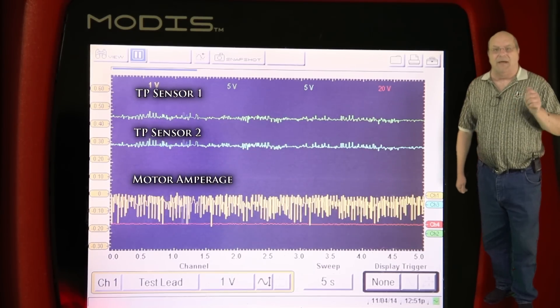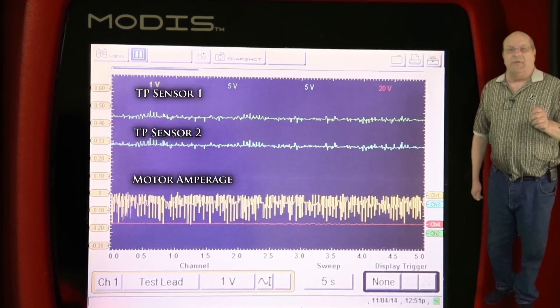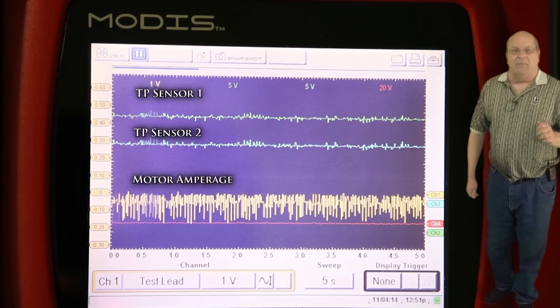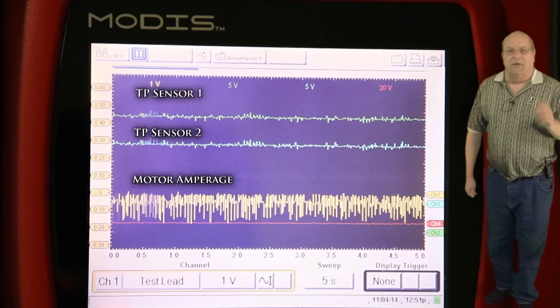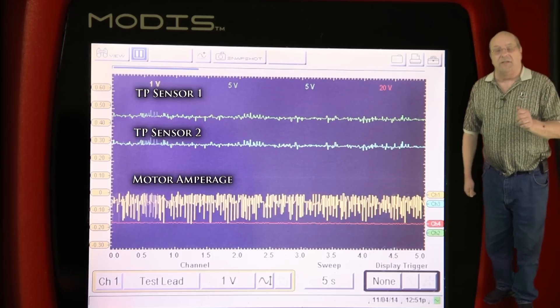As you can see on the scope, when the plate begins to vibrate, the amperage draw goes way out of specs. For this reason, it appears on this throttle body that the motor is defective. If the TP sensor voltages would have spiked or dropped out, it would mean the sensor has failed.